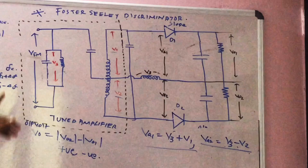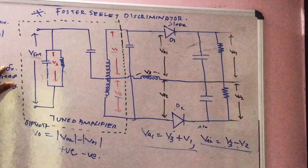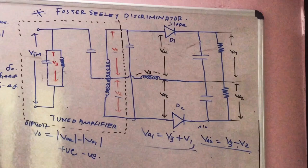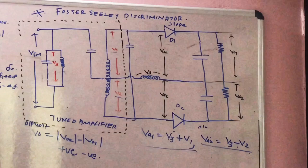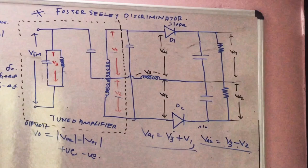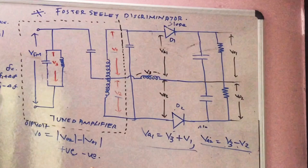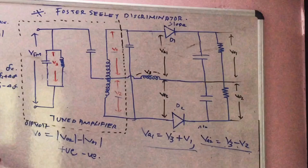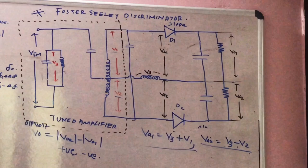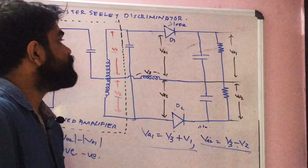For the Foster Seeley discriminator, there are three frequency conditions. When Fn equals Fc (at resonance), V01 and V02 are equal, so output voltage is zero. When Fc plus delta F is applied, V02 is greater than V01, so output voltage is positive. When Fc minus delta F is applied, V02 is less and V01 is greater, so the result is negative — output voltage is negative.